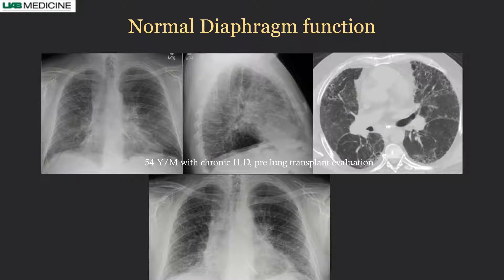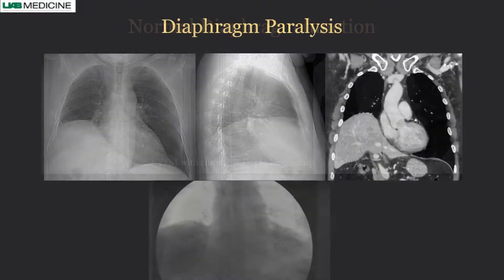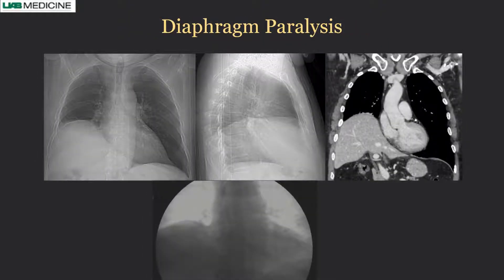Here is a 54-year-old with chronic interstitial lung disease in pre-lung transplant evaluation. The patient has both emphysema and basal interstitial lung disease. We performed DDR and showed symmetrical diaphragm movement with no paradoxical movement. This next patient has right hemidiaphragm elevation — it is completely elevated, not partial — and the liver is elevated on the lateral and coronal CT views.